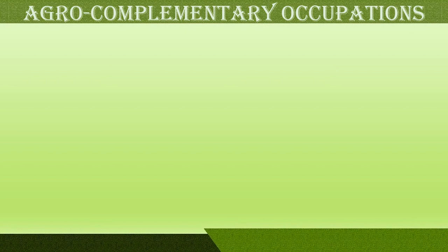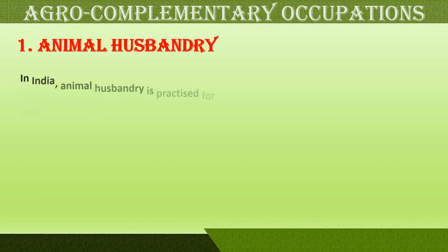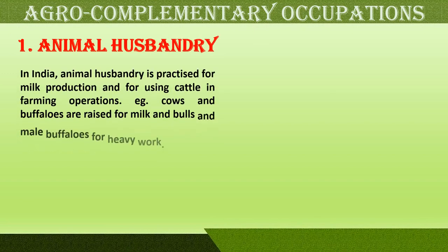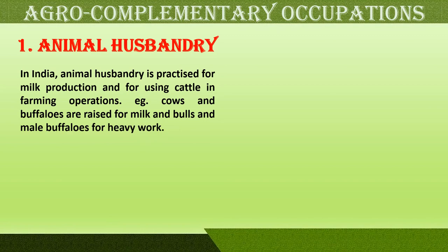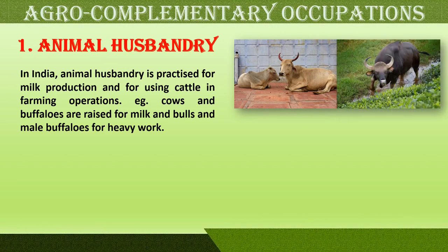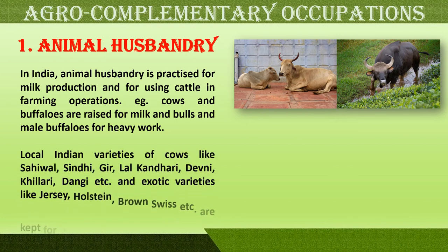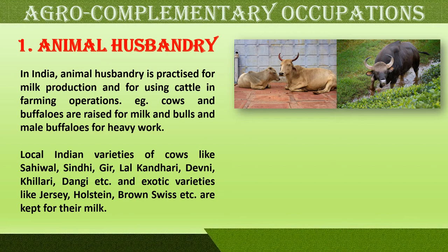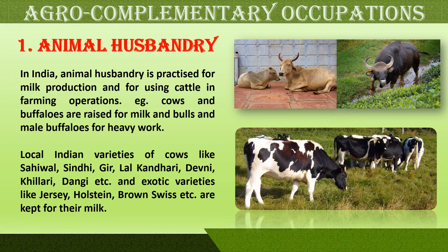Agro complementary occupations are those related to agriculture. The first is animal husbandry, which in India is practiced for milk production and using cattle in farming operations. Cows and buffaloes are raised for milk and bulls and male buffaloes for heavy work. Local Indian varieties of cows include Saival, Sindhi, Gir, Devni, and Dangi, while exotic varieties like Jersey, Holstein, and Brown Swiss are also kept for milk in animal husbandry.